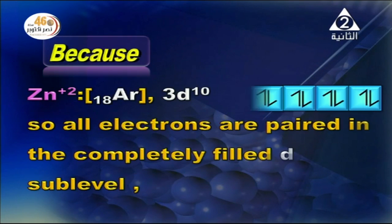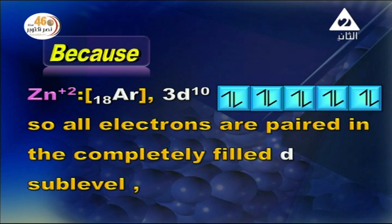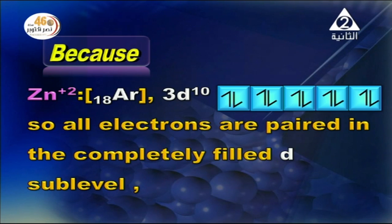Zinc (atomic number 30) has electronic configuration [Ar] 4s2 3d10. When zinc chloride forms, the Zn2+ ion has electronic configuration [Ar] 3d10 after losing the 4s electrons. So the D sub-level has all electrons paired in a completely filled state, making it diamagnetic.